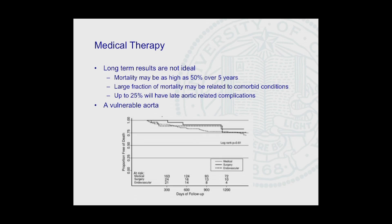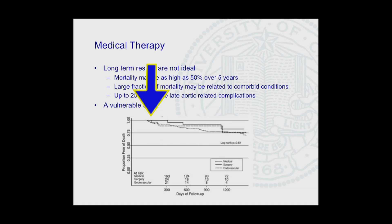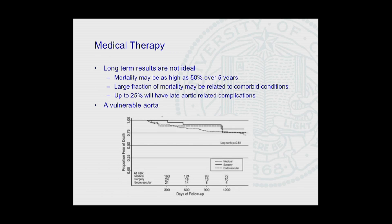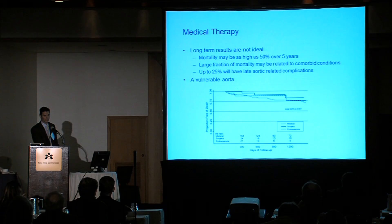However, the long-term results of medically managed patients with chronic dissection are not sterling. Mortality can be as high as 50% over five years. Long-term follow-up data from IRAD looking at three years out from patients who survived their initial presentation showed mortality at three years was about 25% in all three groups — medical, surgical, and endovascular — partly due to underlying comorbid conditions but also largely related to late aortic events. Other studies have shown that up to 20% of patients with chronic aortic dissection will develop aneurysms within about two years. Even if you usher patients through their acute presentation, you're left with a vulnerable aorta prone to developing late complications.